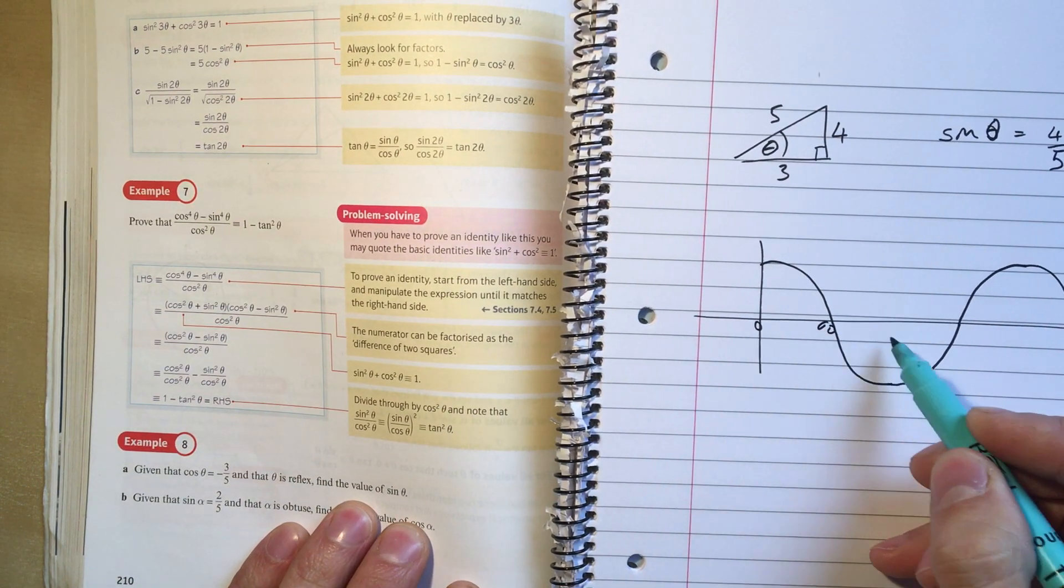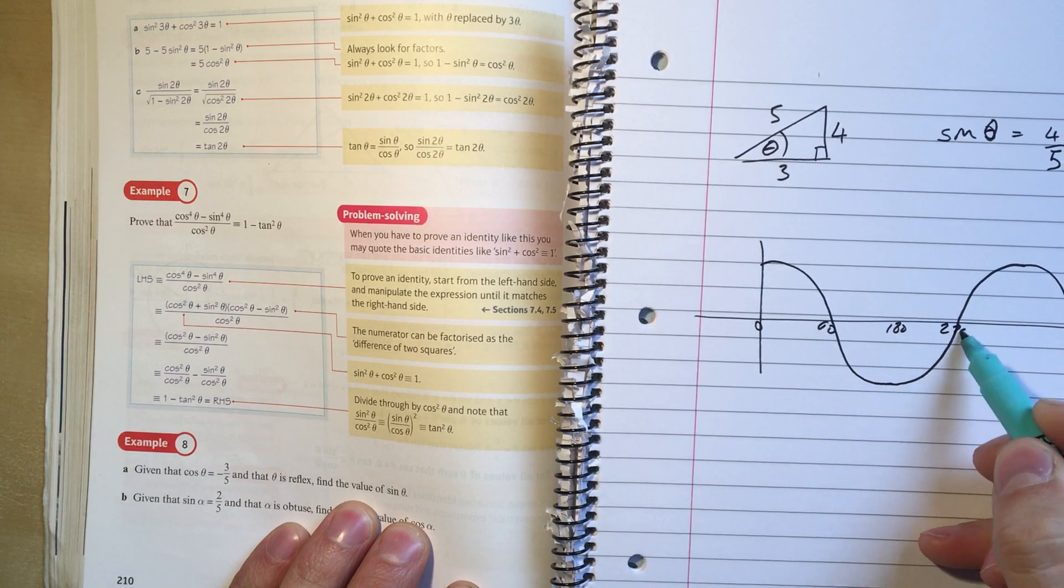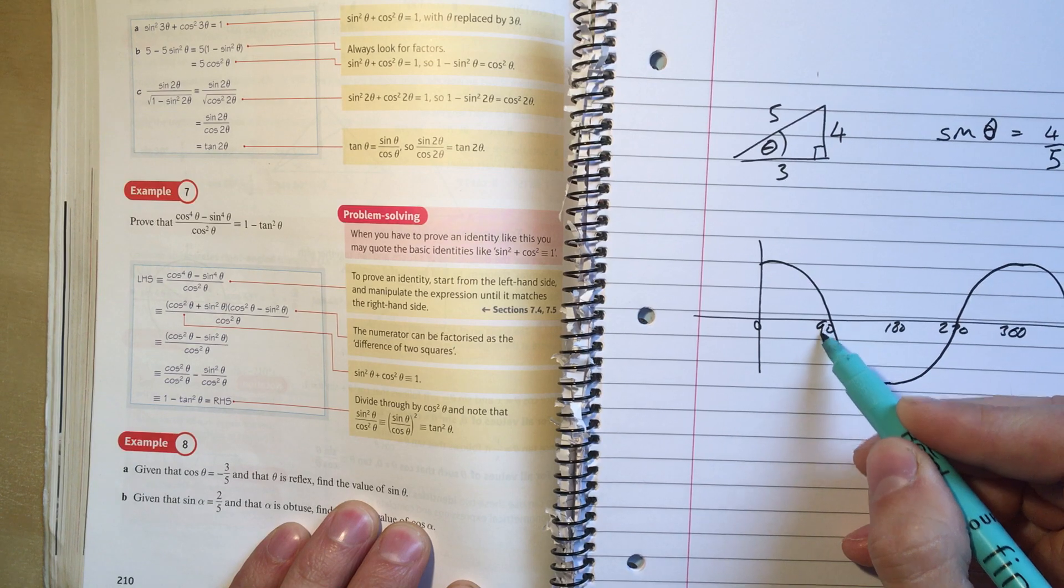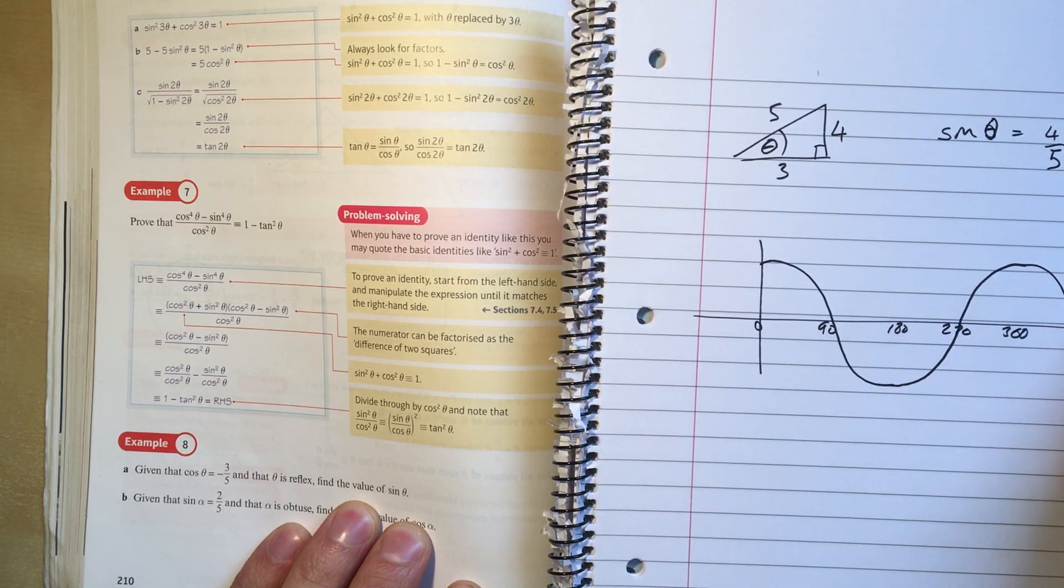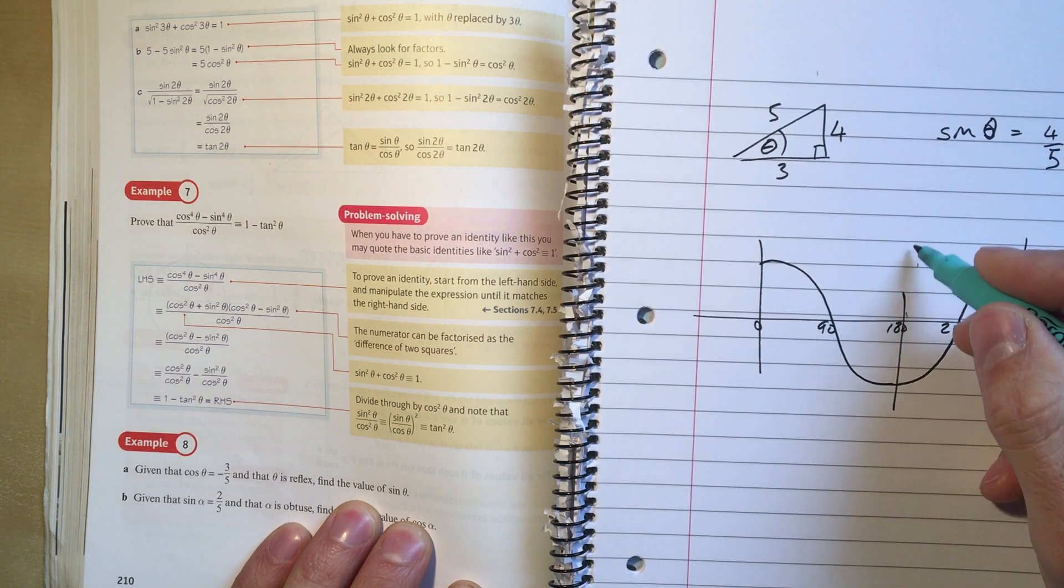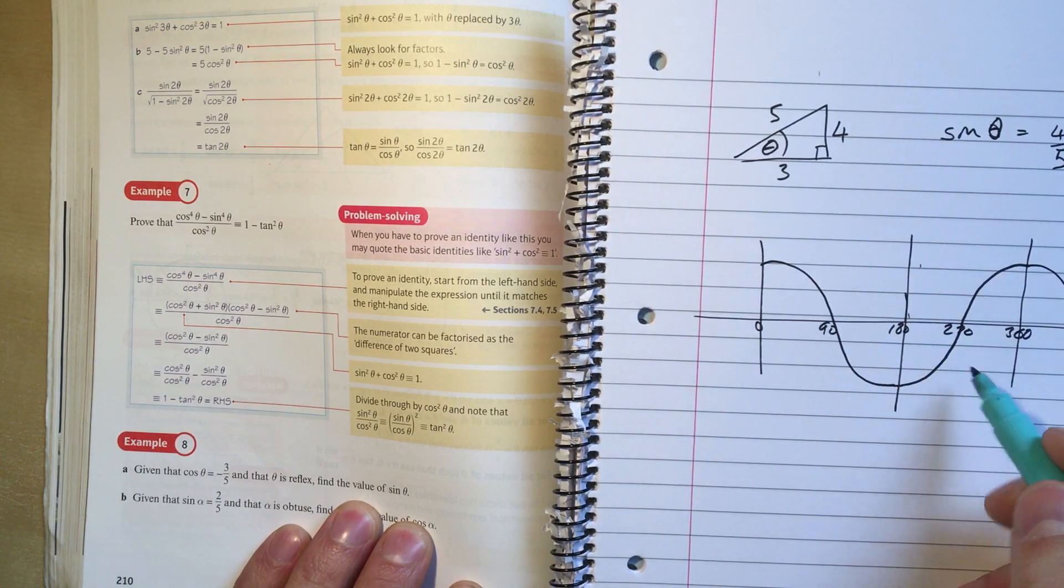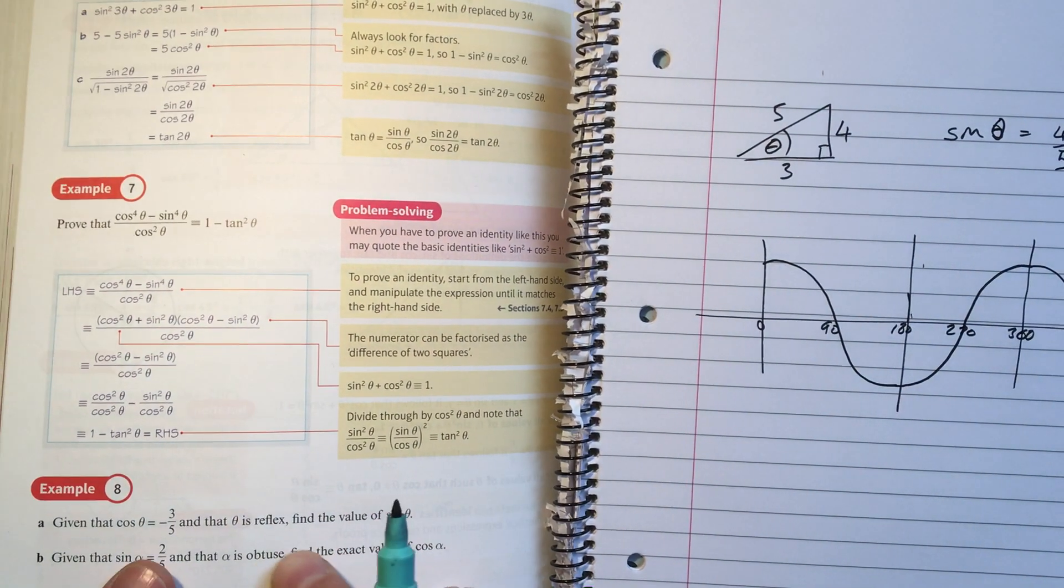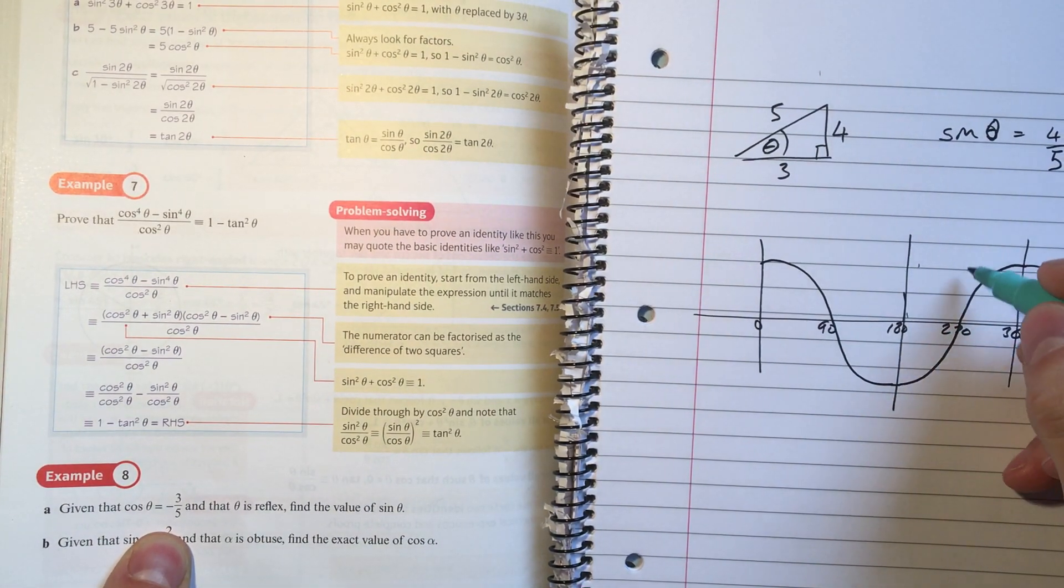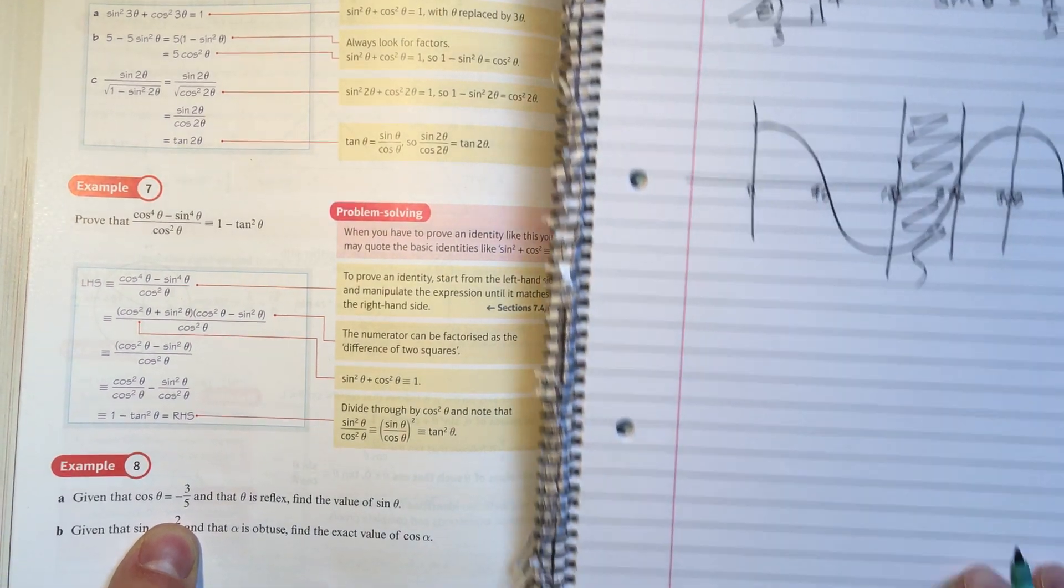So 0, 90, 180, 270, 360. So here, this is the cos graph. Between 180 and 360 is where my reflex angles are. But it says in the question, theta is reflex and cos theta is negative. So the bit of the graph that we're looking at is between 180 and 270.